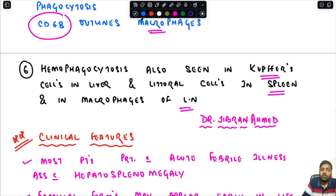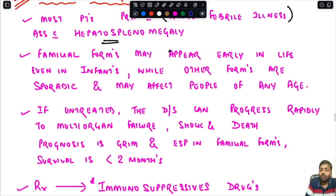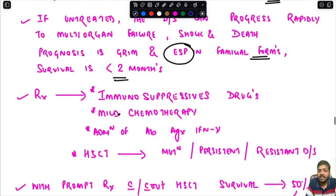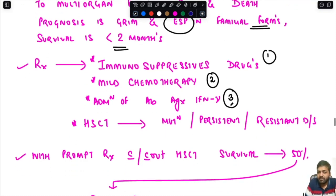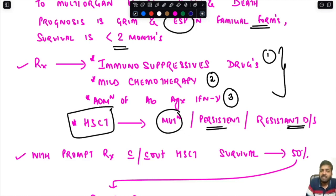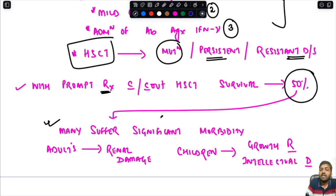Most patients present with an acute febrile illness associated with hepatosplenomegaly. The familial forms may appear early in life, even in infants, while other forms are sporadic and may affect people of any age. If left untreated, the disease can progress rapidly to multi-organ failure, shock, and death. In the familial form, survival is less than two months without treatment. Treatments include immunosuppressive drugs, mild chemotherapy, and antibodies against interferon-gamma.